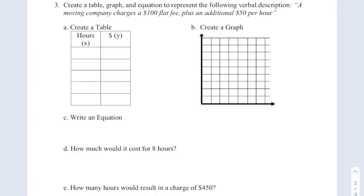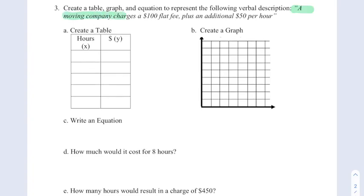All right, so let's look at a problem that puts everything together. A moving company charges a $100 flat fee and an additional $50 per hour. So the $100 flat fee means no matter what happens, you're paying $100. So even if they work for zero hours, you still have to pay them $100.